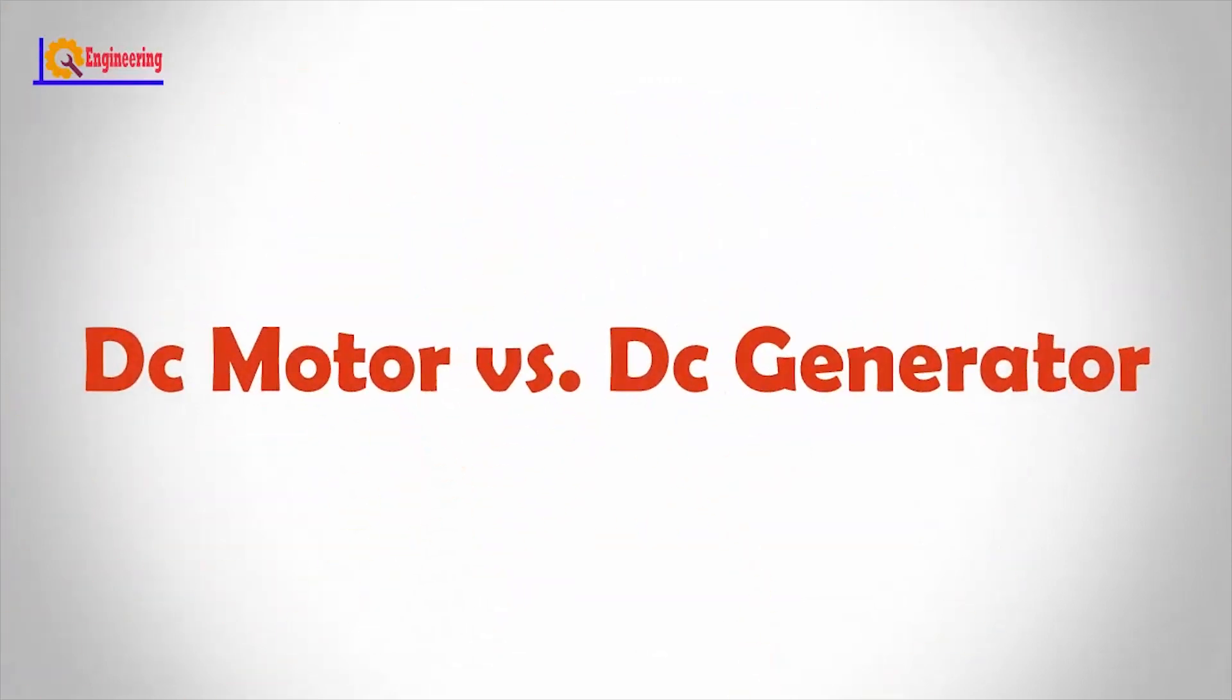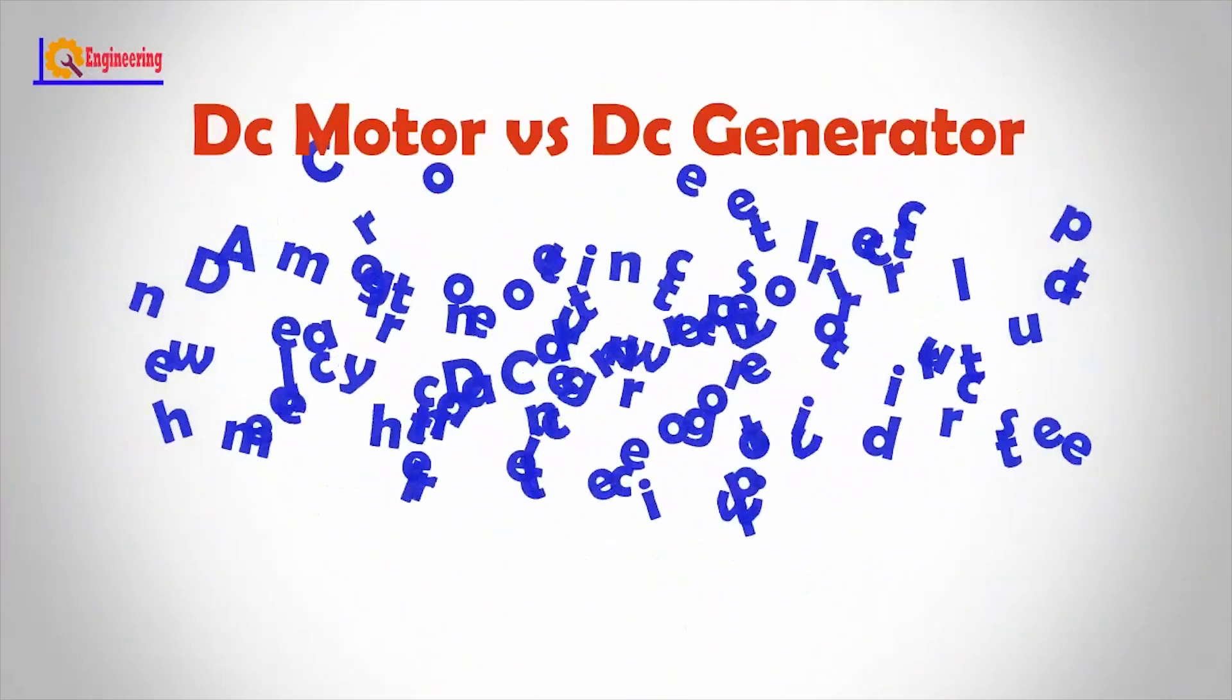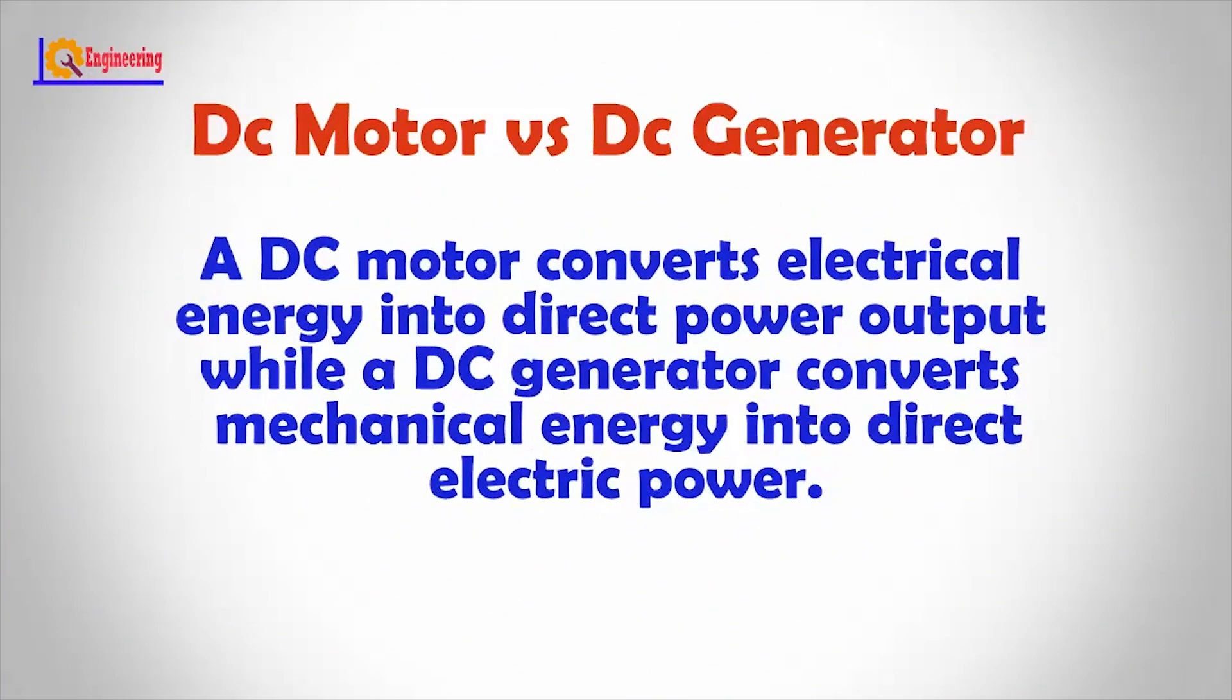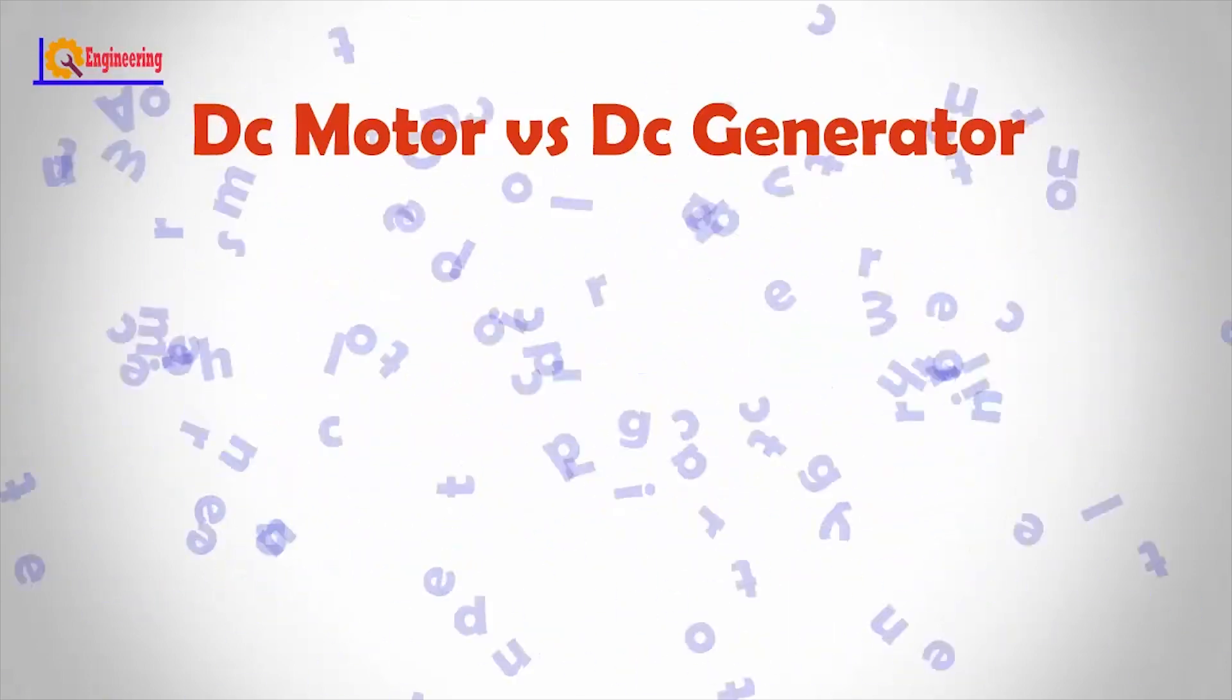These are shortly described for the DC motor versus the DC generator. A DC motor converts electrical energy into direct power output, while a DC generator converts mechanical energy into direct electric power.